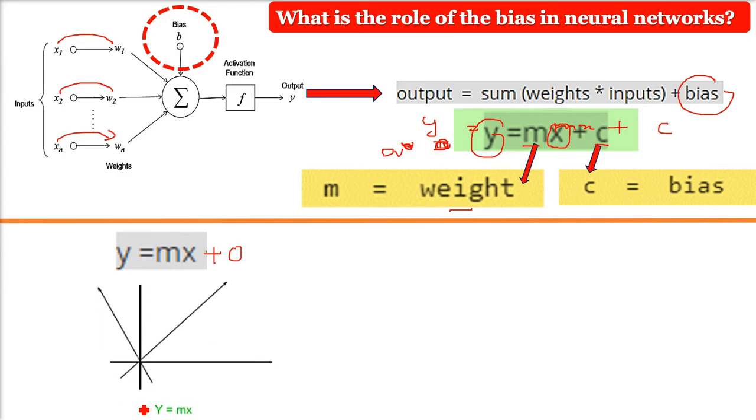It allows you to move the line up and down, fitting the prediction with the data better. Due to the absence of bias, that is the c in this model, it will train our points passing through the origin only, which is not in accordance with the real world scenario.